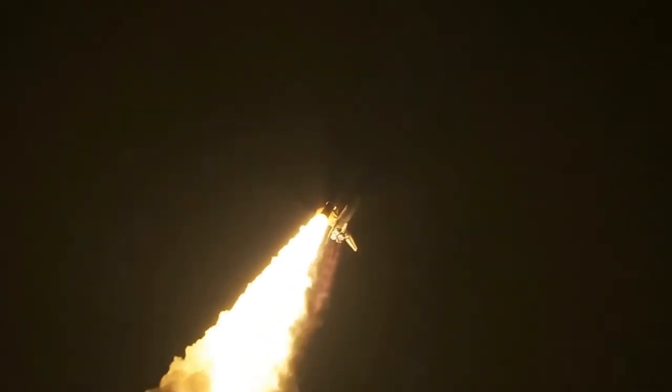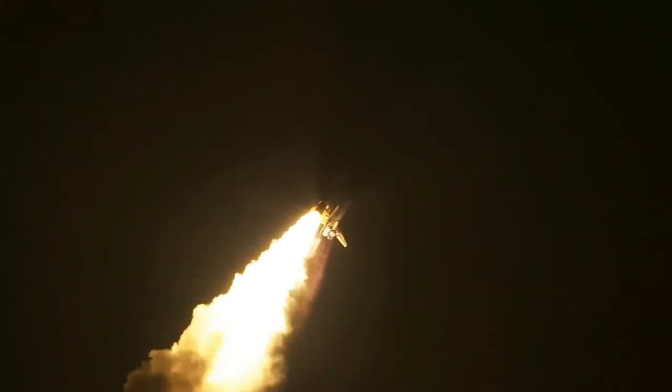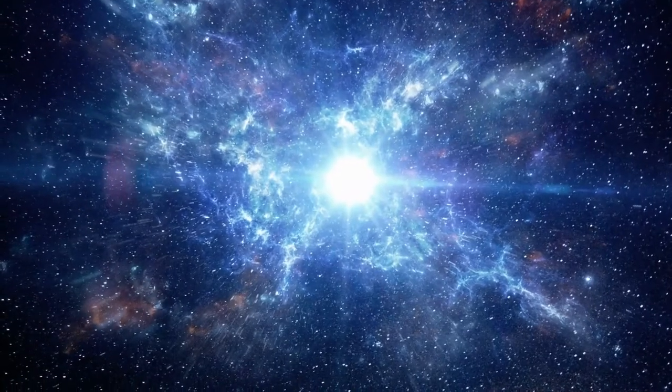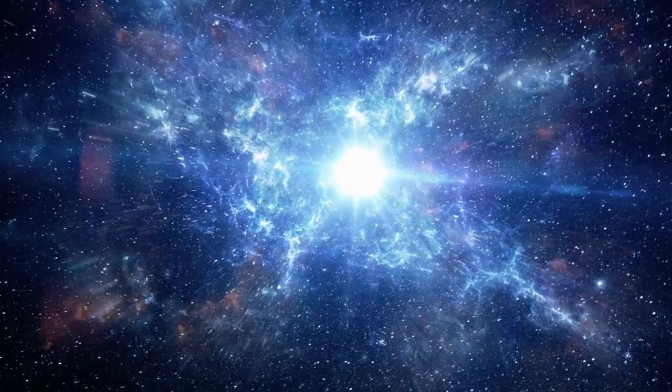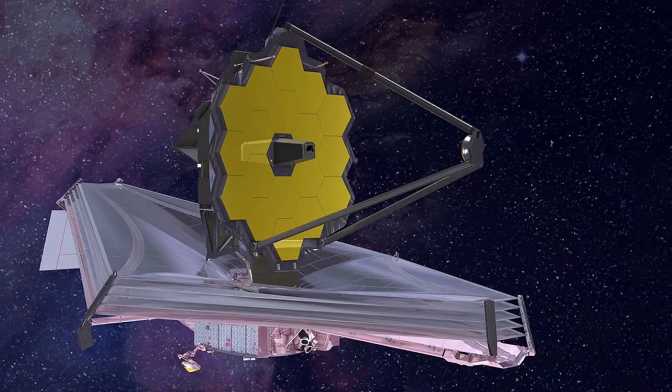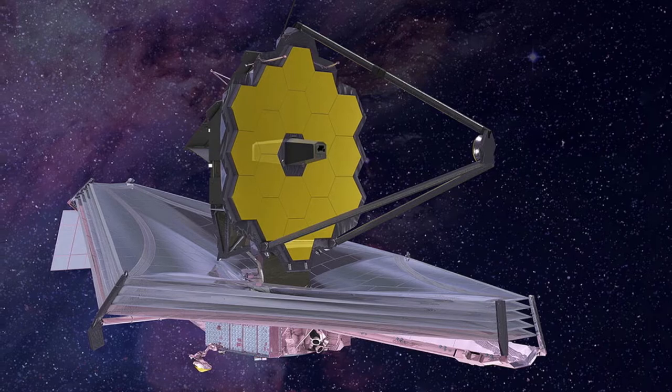After launch, it took 30 days for the James Webb Space Telescope to travel nearly a million miles to its permanent home, a Lagrange point, a gravitationally stable location in space. From here, the telescope will focus on four main objectives.